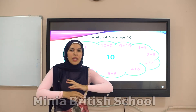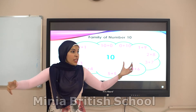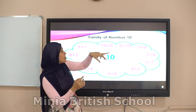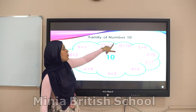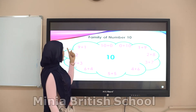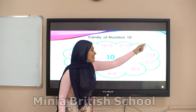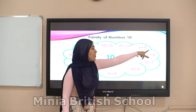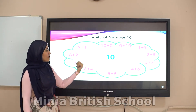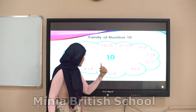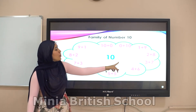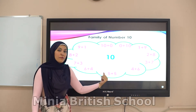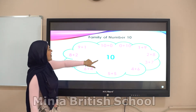Now number ten makes a big family. Each number has its friends: ten with zero, zero with ten; nine with one, one with nine; eight with two, two with eight; seven with three, three with seven; six with four, four with six; and the last friends — five with five.